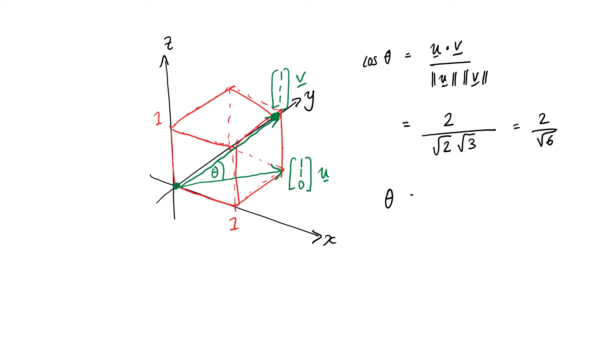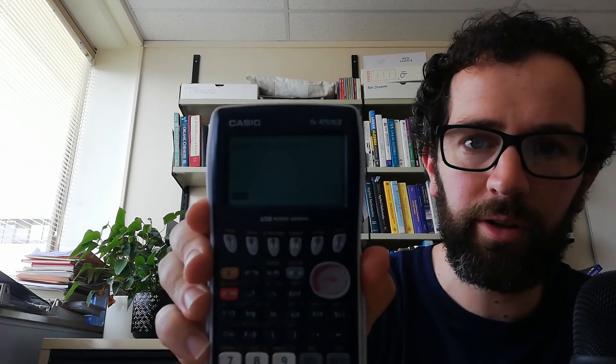Therefore, the angle itself will be the inverse cosine of 2 over the square root of 6. Let's get the calculator out. I would like to do the inverse cosine — shift cos inverse — opening some parentheses: 2 divided by the square root of 6. I think I'm in degrees mode at the moment, so that gives me 35.26 degrees to 2 decimal places.